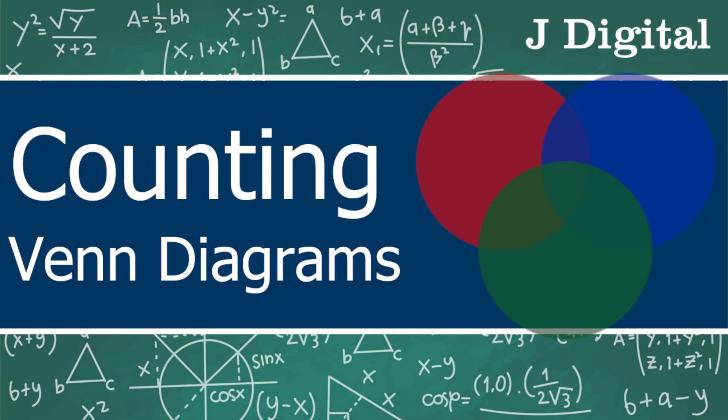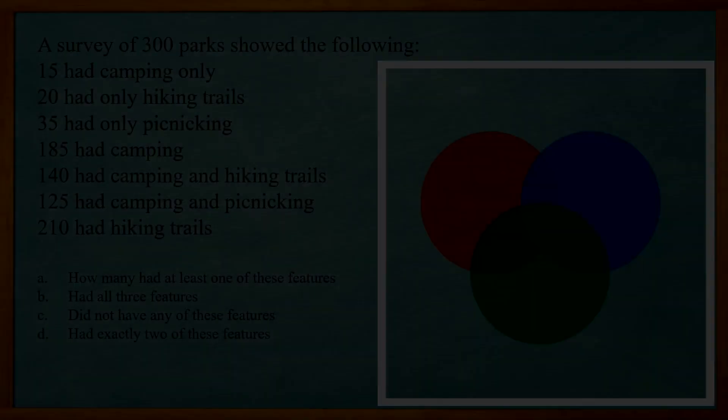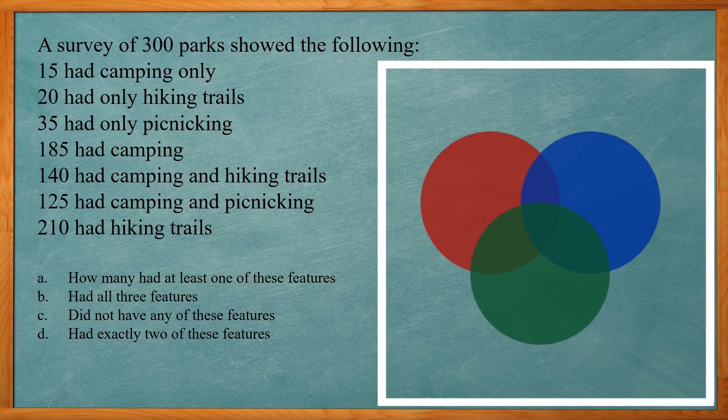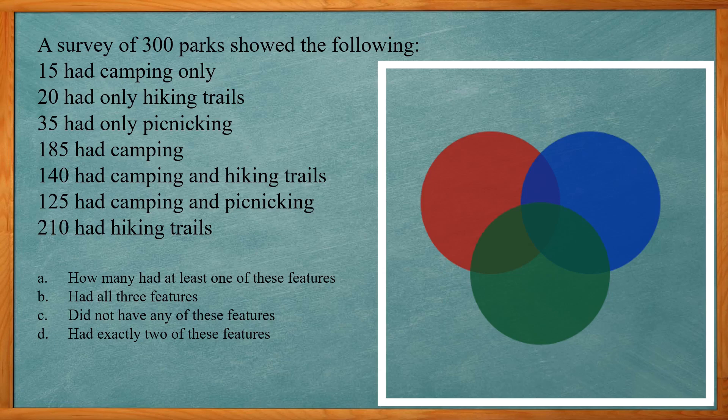In this video I'm gonna go over a difficult Venn diagram problem. This one reads a survey of 300 parks showed the following: 15 had camping only, 20 had only hiking trails, 35 had only picnicking.